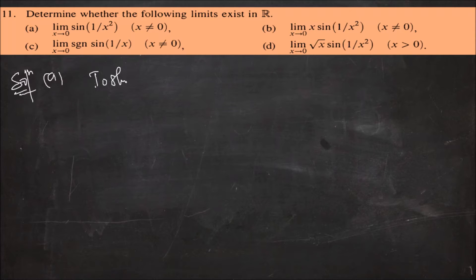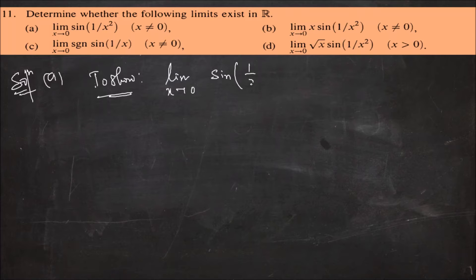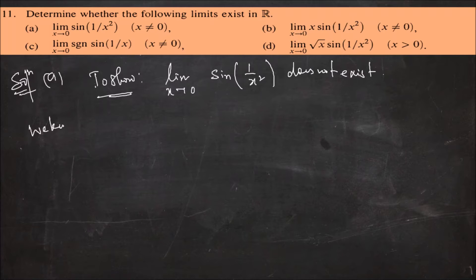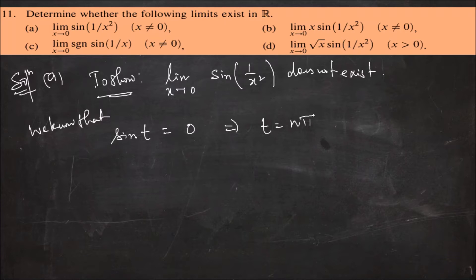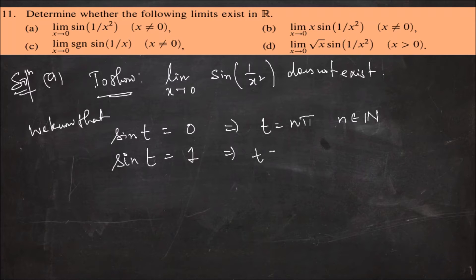We will claim that the limit as x tends to 0 of sin(1/x²) does not exist in R. To show this, we will construct two sequences. We know that the general solution for sin(t) = 0 is t = nπ, where n belongs to the natural numbers, and sin(t) = 1 if t = nπ + π/2, with n belonging to the natural numbers. We will use this result to construct our sequences.